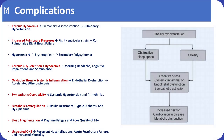OHS leads to multiple systemic complications driven by chronic hypoxemia, hypercapnia, and inflammation. Persistent low oxygen levels cause pulmonary vasoconstriction, resulting in pulmonary hypertension, right ventricular strain, and cor pulmonale. Hypoxemia stimulates erythropoietin release, leading to secondary polycythemia, while chronic CO2 retention contributes to morning headaches, cognitive impairment, and daytime somnolence.